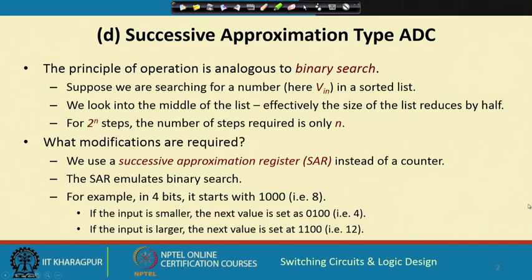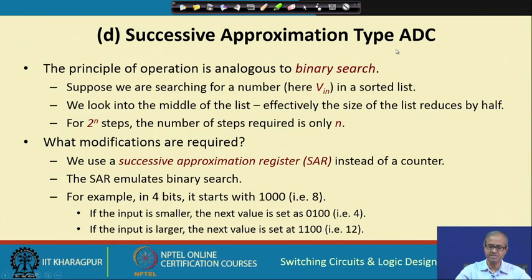In both of these methods, if the total number of bits is n, the number of steps can be 2 to the power n. So in the worst case the counter has to count from 0 up to 2 to the power n, meaning the worst case conversion complexity was 2 to the power n clock cycles. Today we shall be discussing a new technique — another technique of counter-based AD conversion.